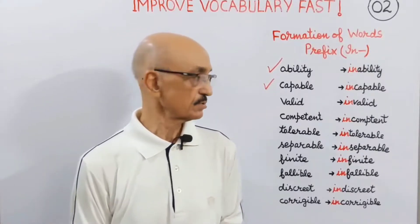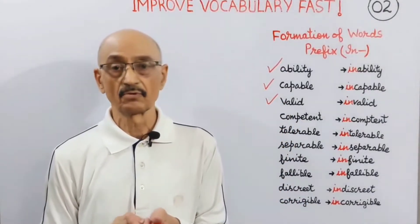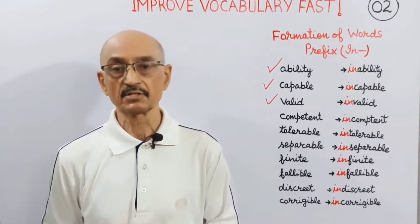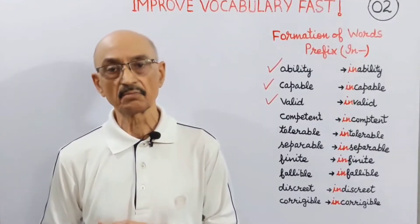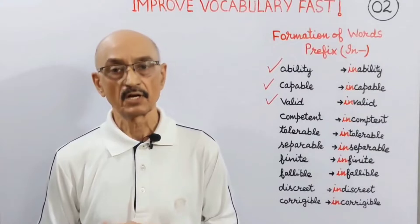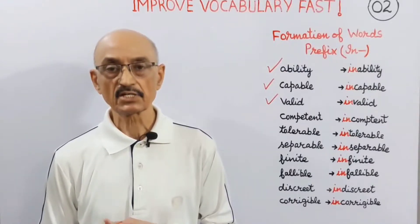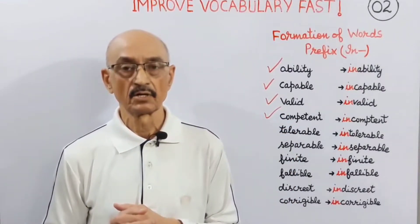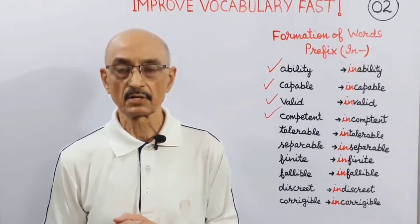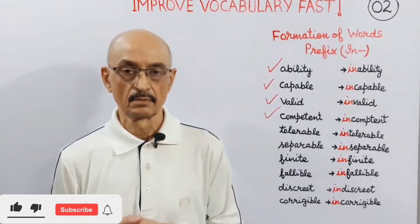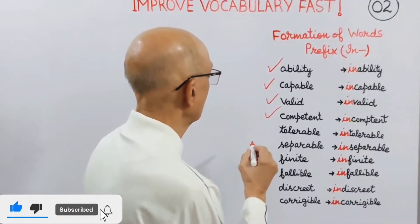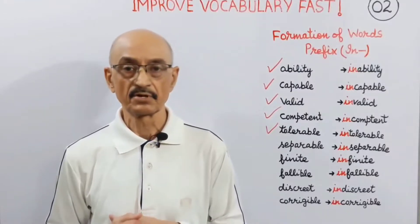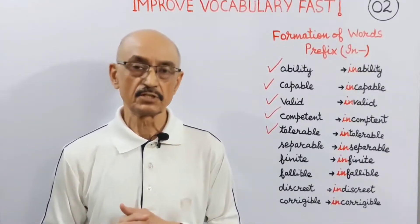The next word is 'valid' — you know the meaning of this word. This is an adjective. If you take prefix 'in' before it, it changes into its antonym 'invalid'. The next word is 'competent', again an adjective. If you take prefix 'in' before it, it becomes 'incompetent'.